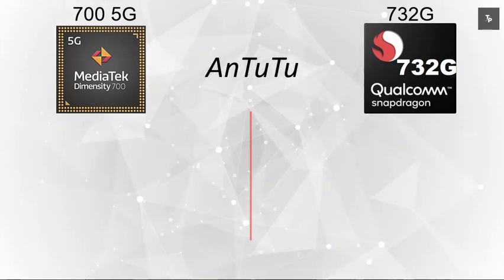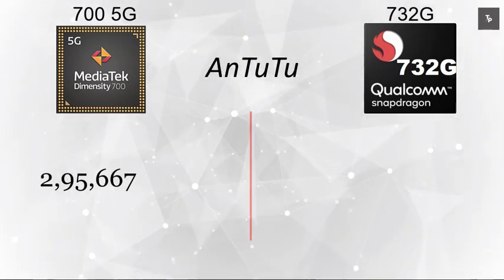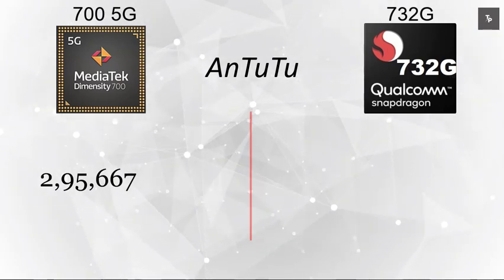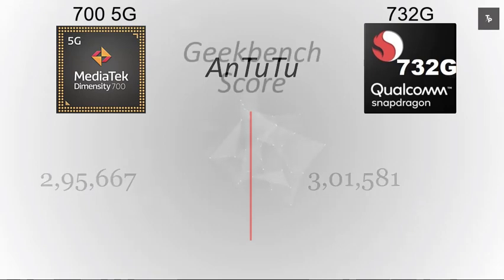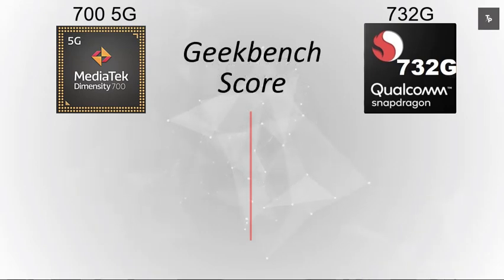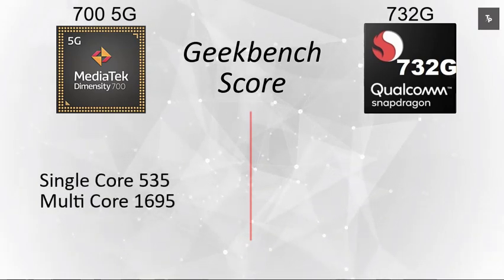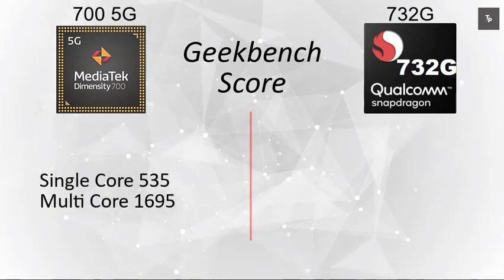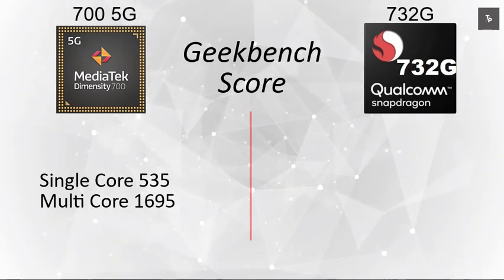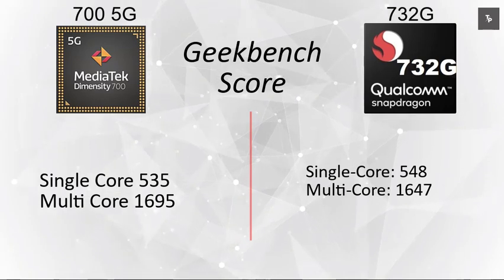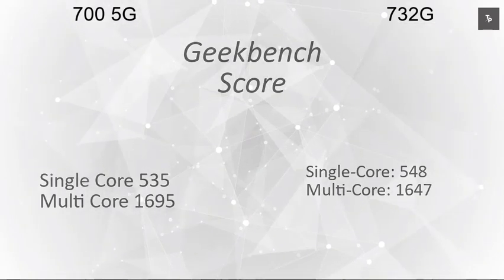Moving on to benchmark scores: on AnTuTu, the MediaTek Dimensity 700 scores approximately 295,000 and the Snapdragon 732G scores around 300,000. For Geekbench, the Dimensity 700 gets a single-core score of 535 and multi-core of 1695, while the Snapdragon 732G gets 548 single-core and 1647 multi-core.